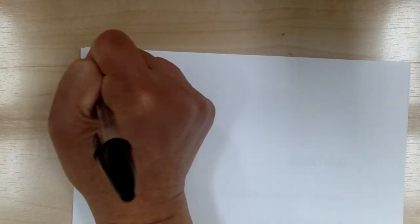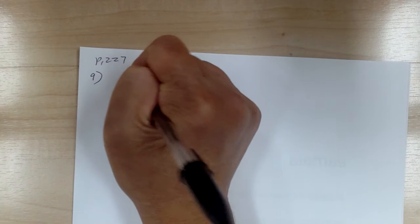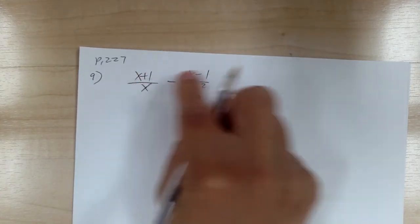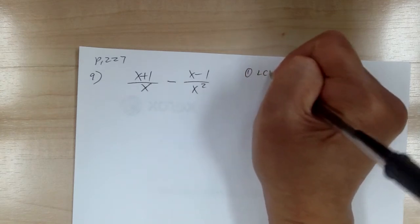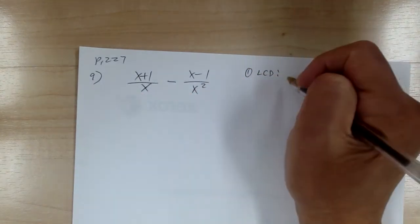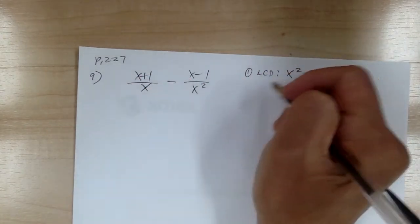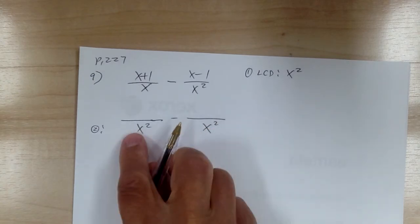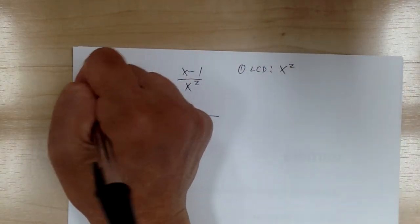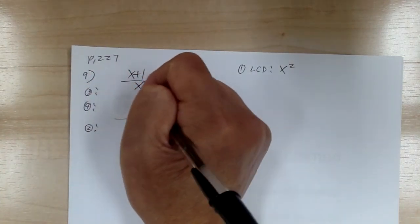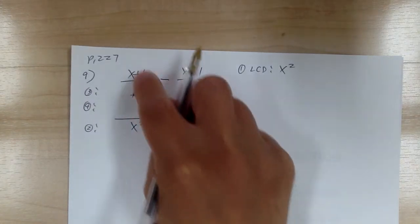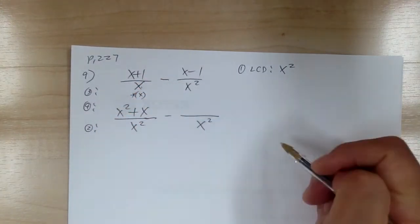Let's go to number nine. You have x plus one over x, minus x minus one over x squared. Do not cancel the x — go through the same steps. Step one: LCD. You have x and x squared, so your common denominator will be x squared. Step two: get your template ready with x squared. Step three and four: from x to x squared, you need to multiply by x. So the bottom, x times x gives x squared; the top, you'll get x squared plus x.